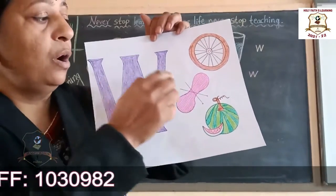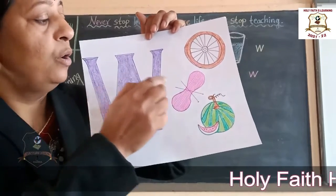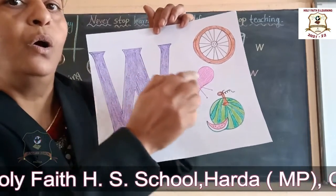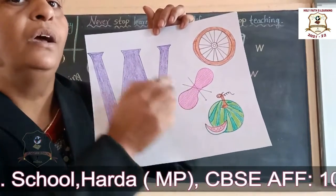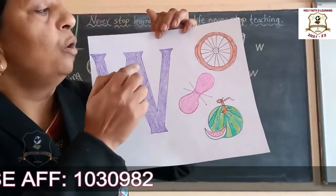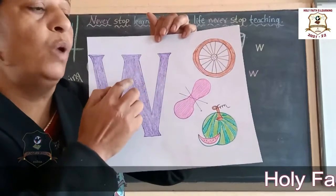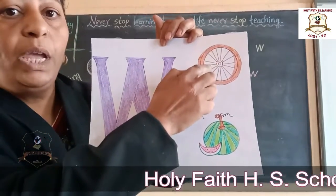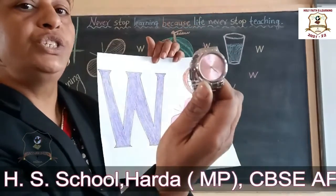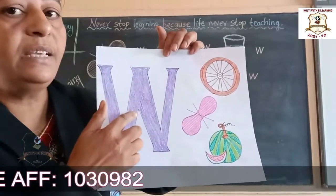Sound of W is 'waw'. Wa-wa, word. Wa-wa, word. Wa-wa, watermelon. Wa-wa, watermelon. Wa-wa, wheel. Wa-wa, Daniel. Wa-wa, what. Wa-wa, what. So which letter is this? W. And the sound of W is 'wa'.